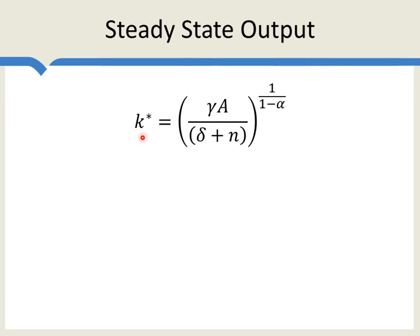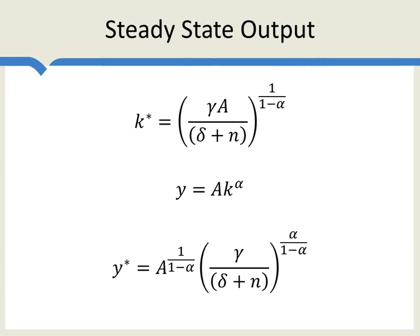From the previous slide, the steady-state capital-labor ratio is given by that expression. Output per worker equals A times the capital-labor ratio to the power of alpha. Substituting K* in, we get the steady-state level of output per worker. There's an A outside the parentheses and also an A inside; combining them gives the final expression for steady-state output per worker according to the Solow model.